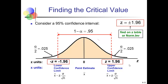Starting with the standard normal distribution centered at zero, I want the Z-critical value where 95% of the area is between the boundaries. Because the normal distribution is symmetric, 5% of the area is outside these boundaries, split evenly between the two tails: 2.5% in the lower tail and 2.5% in the upper tail.